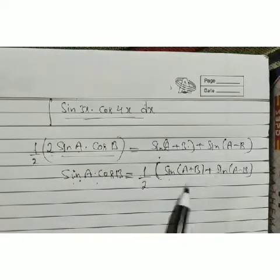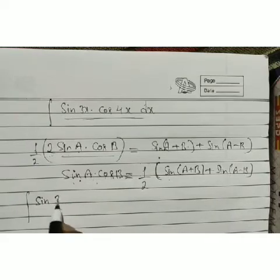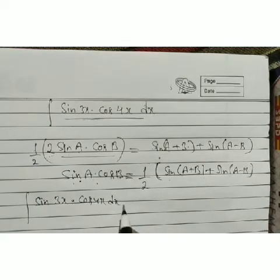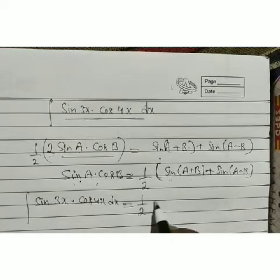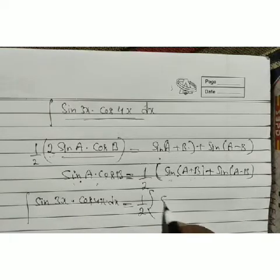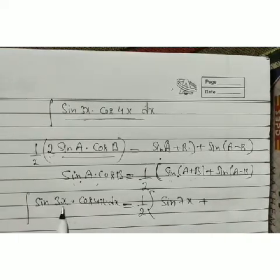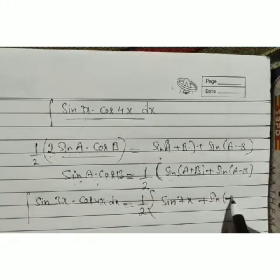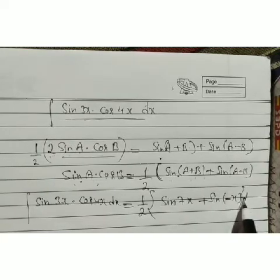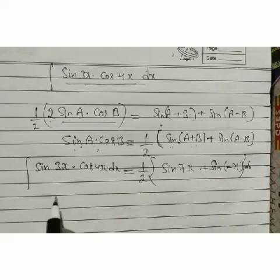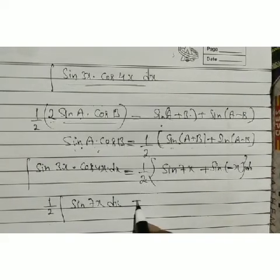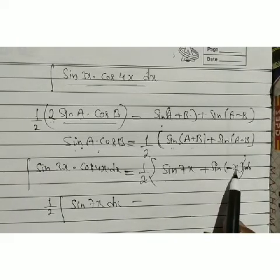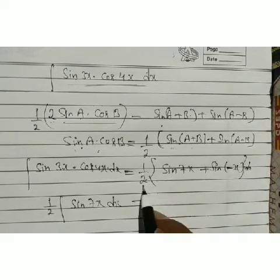Using the identity sin A · cos B = (1/2)[sin(A+B) + sin(A−B)], with A = 3x and B = 4x: sin 3x · cos 4x = (1/2)[sin(3x+4x) + sin(3x−4x)] = (1/2)[sin 7x + sin(−x)]. Since sin(−θ) = −sin θ, this becomes (1/2)∫sin 7x dx − (1/2)∫sin x dx.